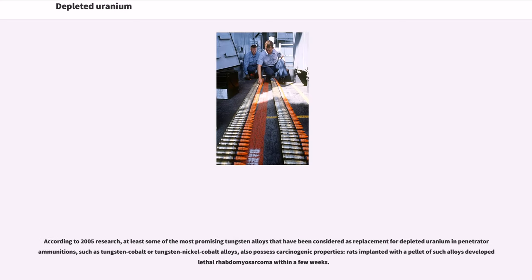According to 2005 research, at least some of the most promising tungsten alloys considered as replacements for depleted uranium in penetrator ammunitions — such as tungsten-cobalt or tungsten-nickel-cobalt alloys — also possess carcinogenic properties. Rats implanted with a pellet of such alloys develop lethal rhabdomyosarcoma within a few weeks.